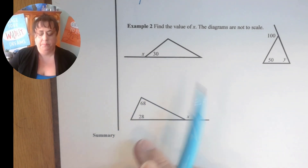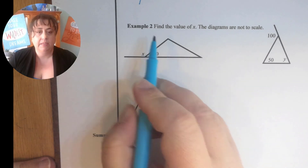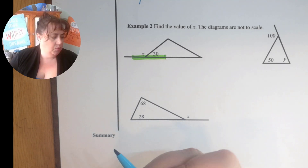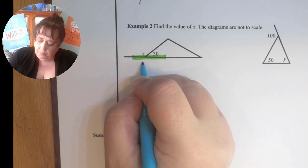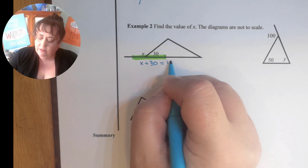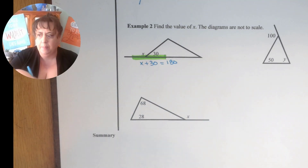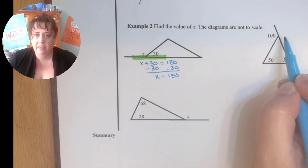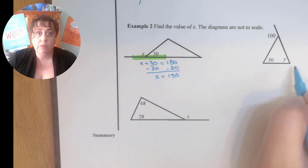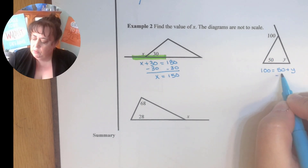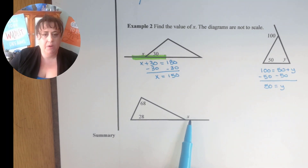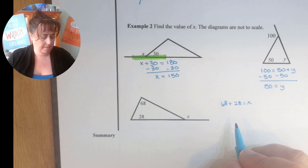This first one just makes a straight line, so we know a straight line is 180 degrees. So x plus 30 equals 180 — we didn't even need the exterior angle rule. But this next one we do: 100 equals 50 plus y. Subtract 50 from both sides: y equals 50. And for this one: x equals 68 plus 28, so x equals 96.